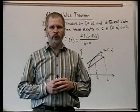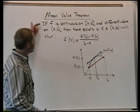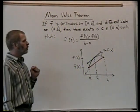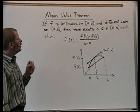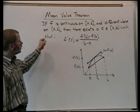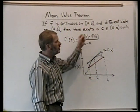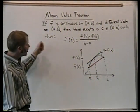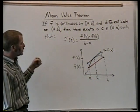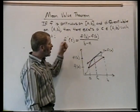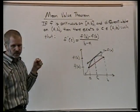Proof of the mean value theorem for derivatives, which states that if f is continuous on a closed interval from a to b, and differentiable on the open interval from a to b, then there exists at least one c between a and b, such that f'(c) equals [f(b) - f(a)] / (b - a).